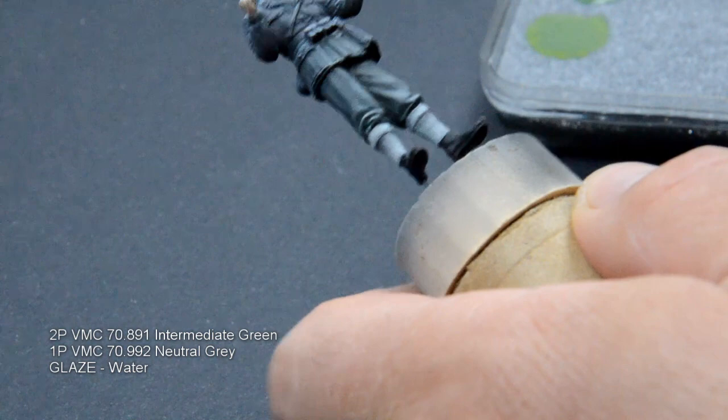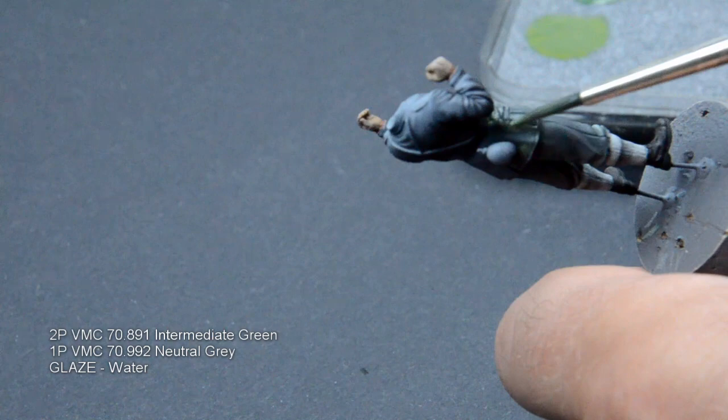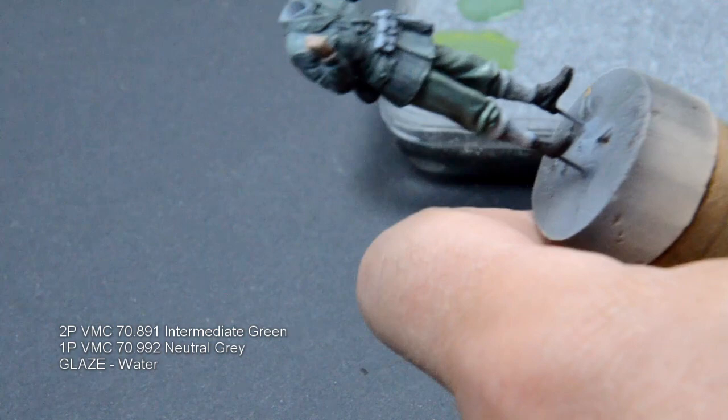Now we can see the glazing process better. Apply the color and spread it around until it's even. And also look at this, the highlights and shadows are appearing by themselves, because of the pre-shading. Nice.